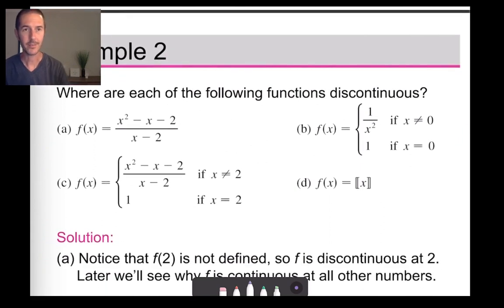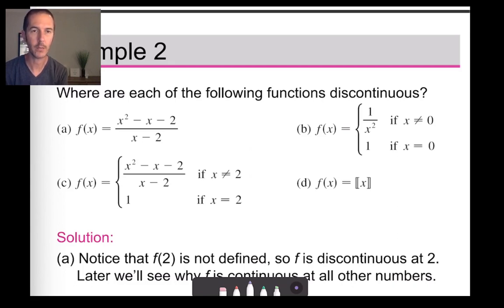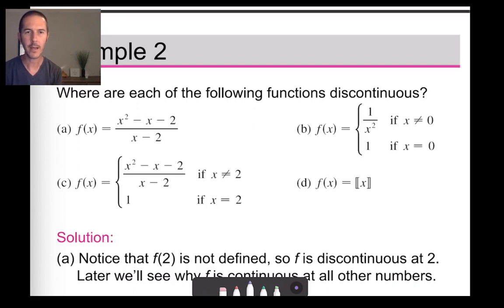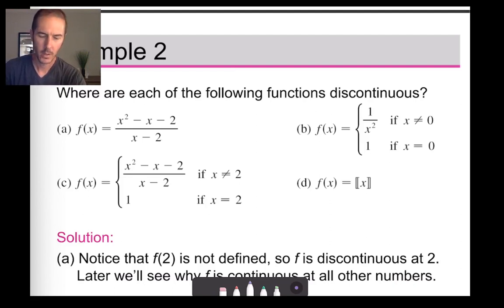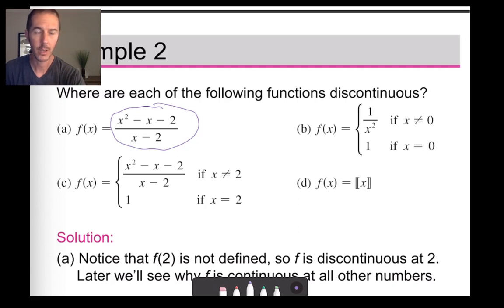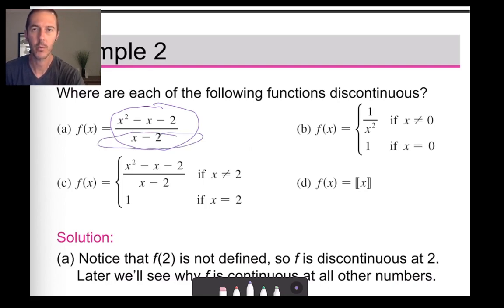It's very nice when we have the opportunity to work with graphs of a function, but occasionally we're only given the algebraic depiction. In option A, you might think there's going to be a discontinuity — probably a vertical asymptote, because when x equals two the denominator equals zero, causing division by zero. So this function is not even defined when x equals two. However, if we factor the numerator, we get x plus one times x minus two, and the denominator is x minus two — these cancel out.